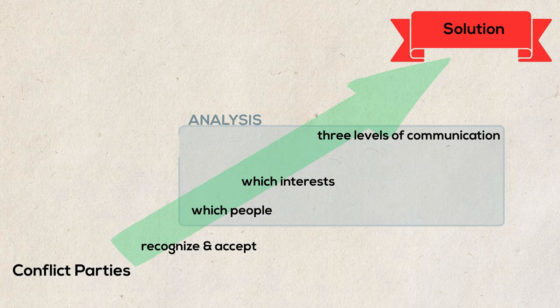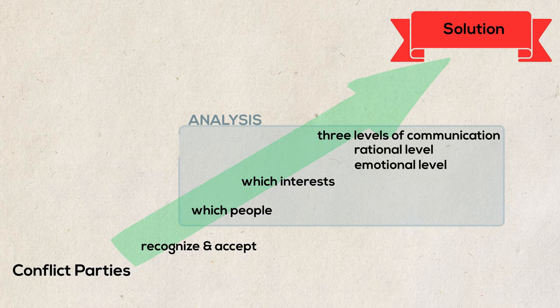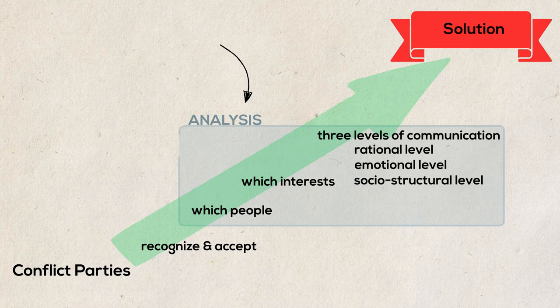The rational level, which is about factual content. The emotional level, which is about emotions behind the opposing interests. And a socio-structural level, which is about social possessions, character, patterns, etc. Building on the analysis, one example is the model called Basic Level of Conflict Resolution, according to Schwarz.